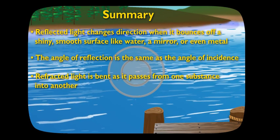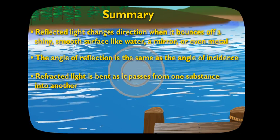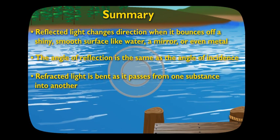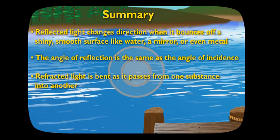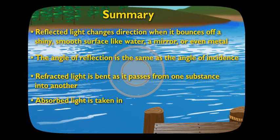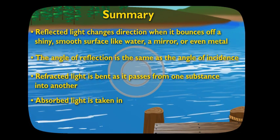And light that's refracted is bent as it passes from one substance into another. Refracted light makes objects look bent. And last of all, light can be absorbed or taken into a substance, and that affects the colors we see.